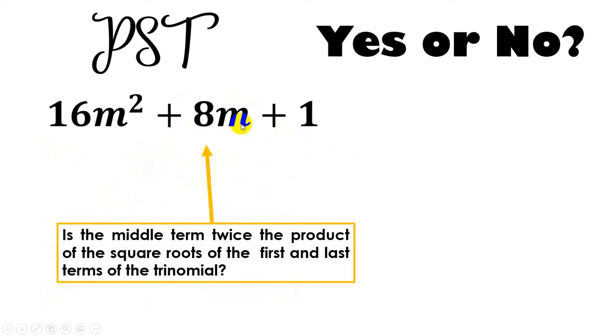Let's go to the second characteristic. Is the middle term twice the product of the square roots of the first and last terms of the trinomial? This middle term should be twice the product of the square roots of the first and last term. Let's get the square root. What is the square root of 16m squared? The answer is 4m. And what is the square root of 1? The answer is 1.